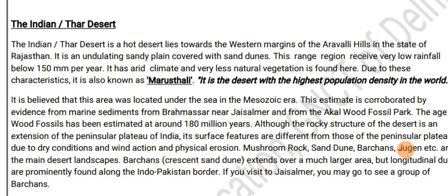The Indian Thar Desert. The Indian Thar Desert is the hot desert that lies toward the western margin of the Aravali Hills in the state of Rajasthan. It is an undulating sandy plain covered by sand dunes. The region receives very low rainfall, below 150 mm per year. It has an arid climate and very less natural vegetation is found here.